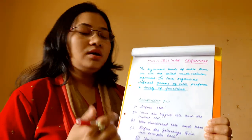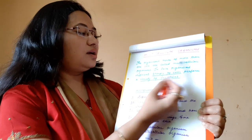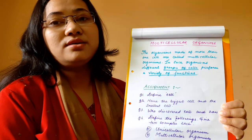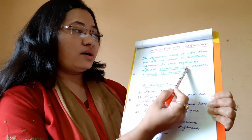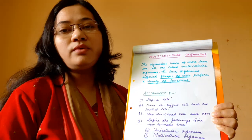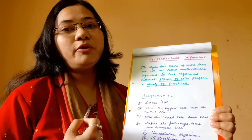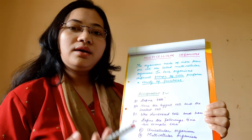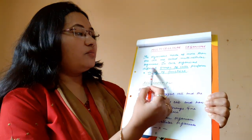In contrast to unicellular organisms, organisms made of more than one cell are called multicellular organisms. We are multicellular organisms — our body is made up of trillions of cells. In multicellular organisms, different groups of cells perform a variety of functions. For example, red blood cells carry oxygen, and nerve cells conduct impulses.